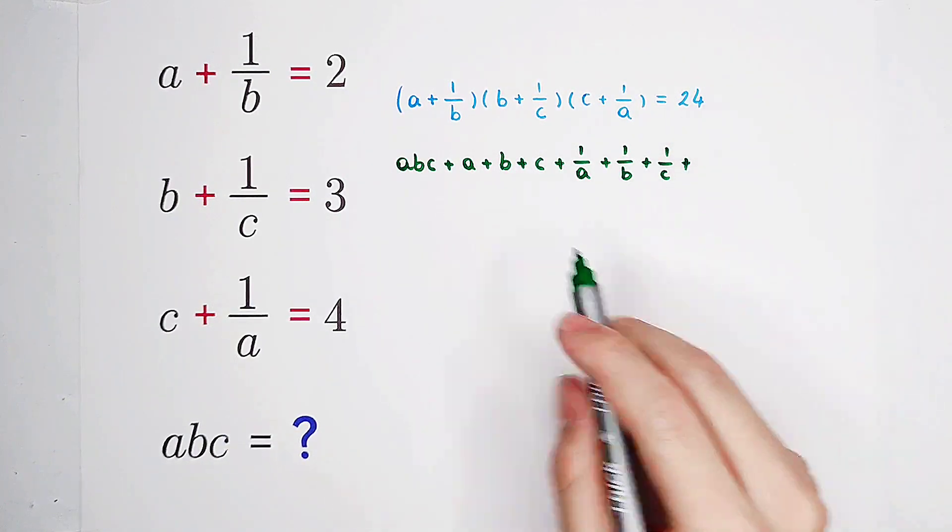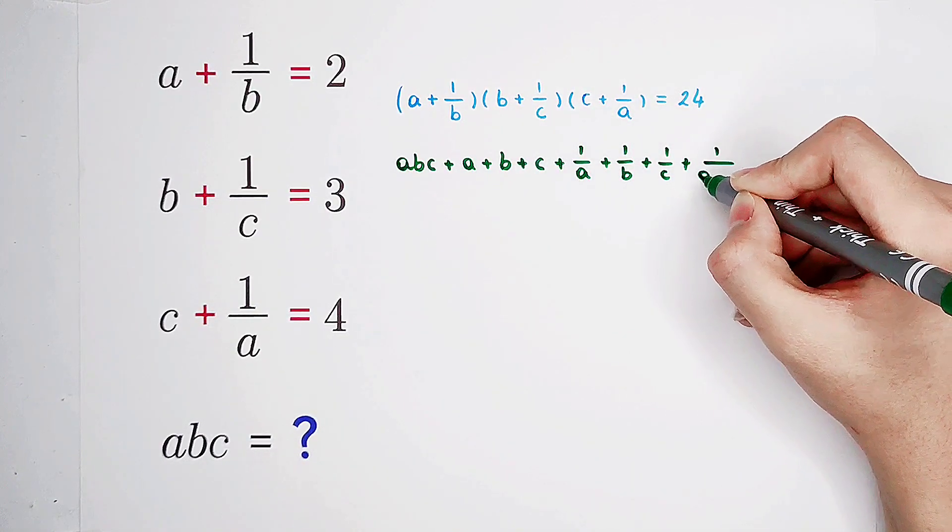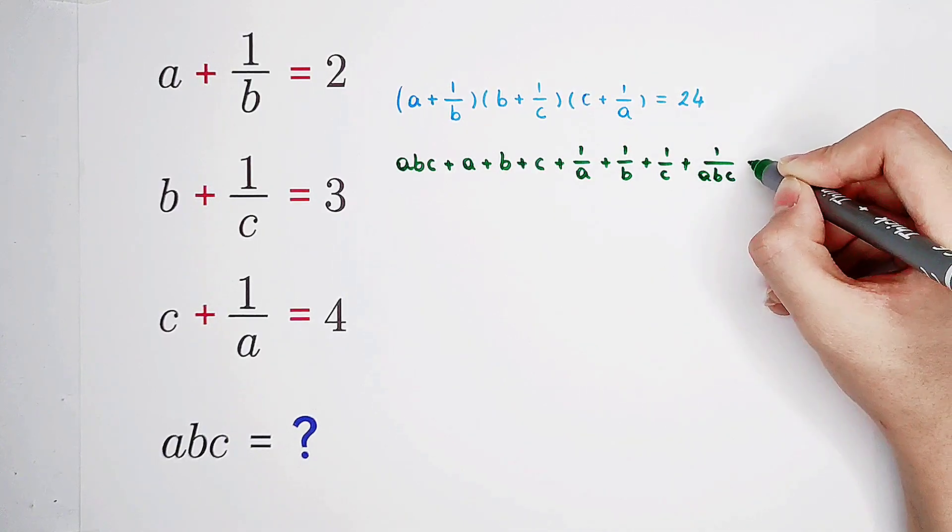At last, we have one over b times one over c, then times one over a. One over a, b, c. 24.